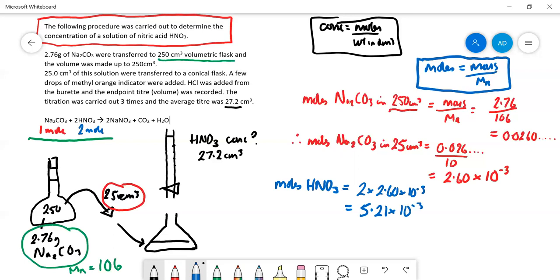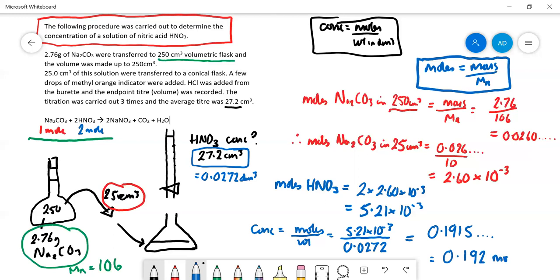Can we work out the concentration of the nitric acid? We can. Concentration equals moles over volume. The number of moles is 5.21 times 10 to the minus 3, and the volume is 27.2 centimeters cubed, which is 0.0272 dm cubed. That equals 0.1915 moles per decimeter cubed. We should give our answer to three significant figures, so it's 0.192 moles per decimeter cubed.